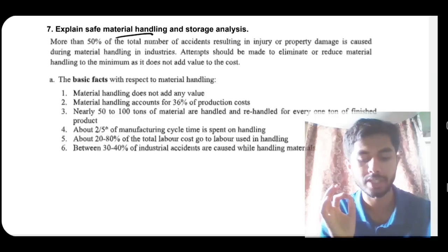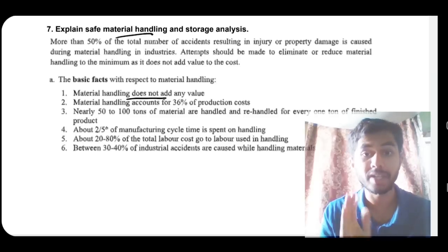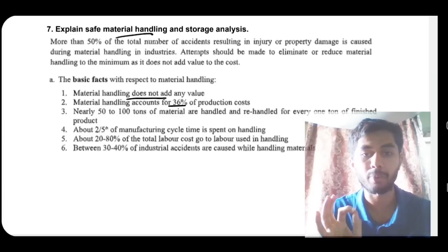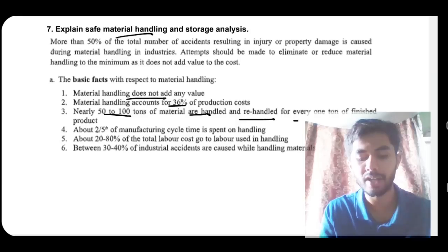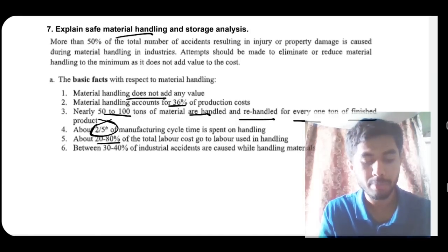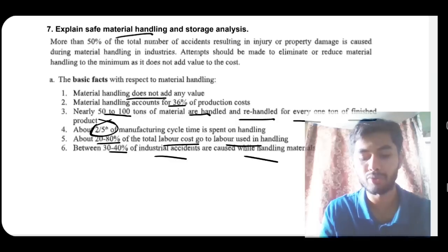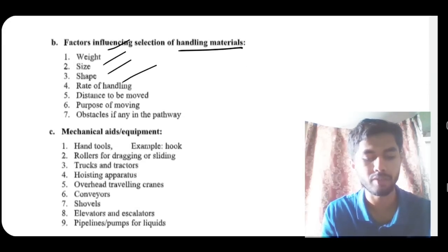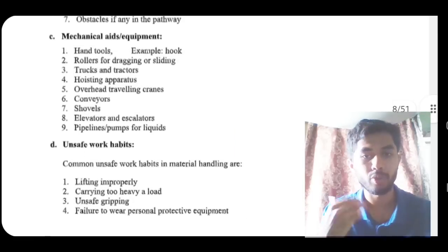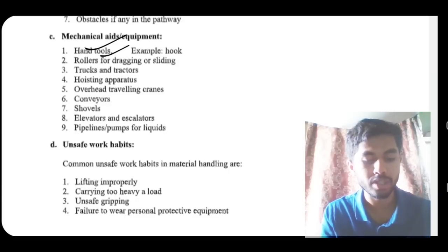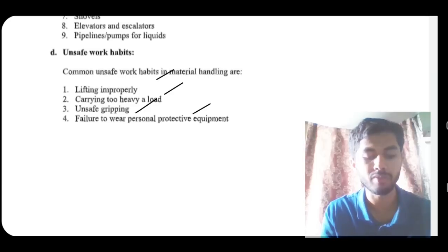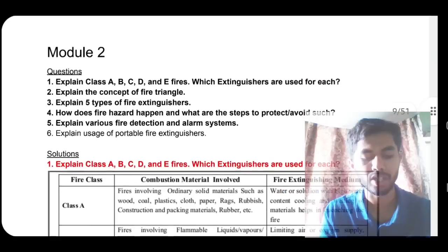Safe material handling and storage: material handling does not add value to the product but improper handling can cause harm. It accounts for 36% of production costs; 50 to 100 tons of materials are handled and re-handled per ton of finished product; two-fifths of cycle time is spent on handling; 20 to 80% of total labor cost goes to material handling; and 30 to 40% of industrial accidents are caused by improper handling. Factors affecting handling: weight, size, shape, rate of handling, distance, purpose of moving, obstacles, and available mechanical aids. Unsafe habits include lifting improperly, carrying too heavy a load, unsafe gripping, and failure to wear PPE.